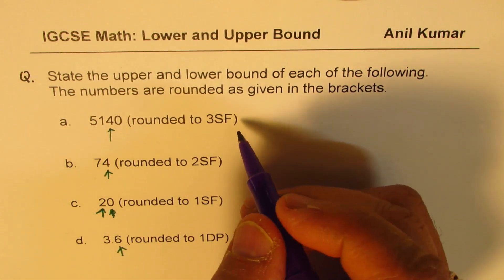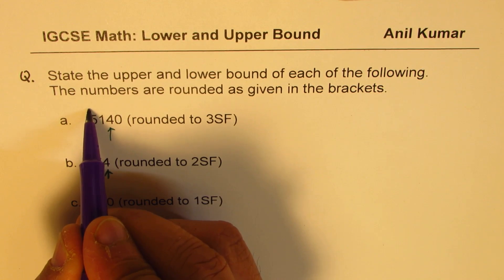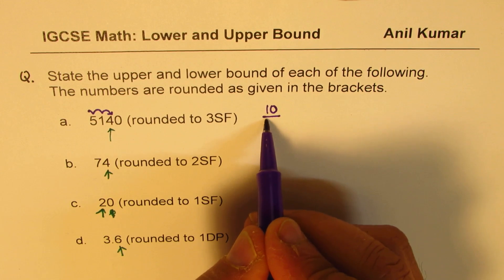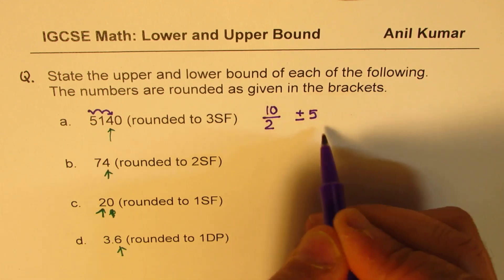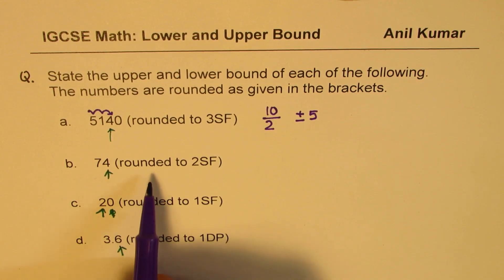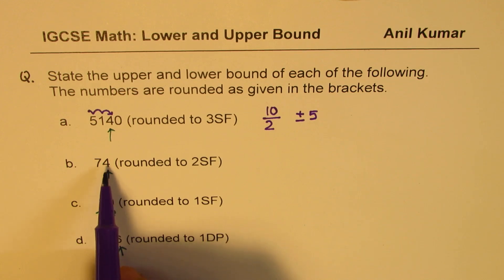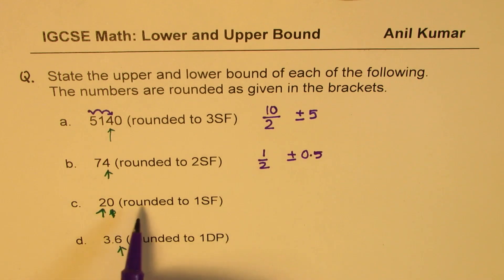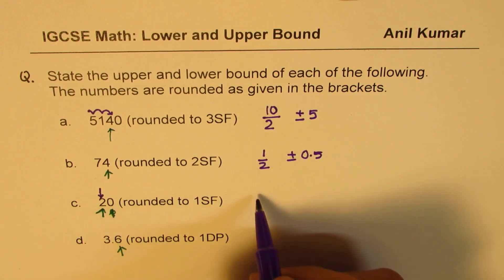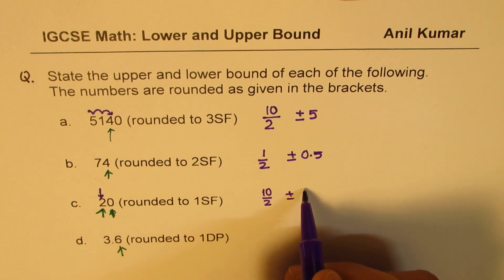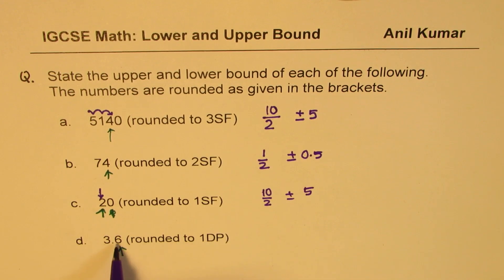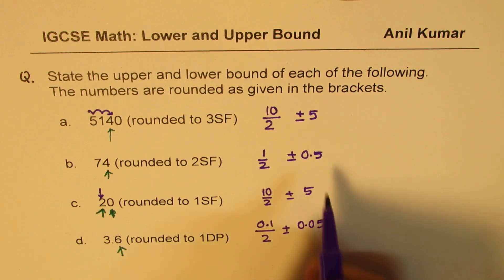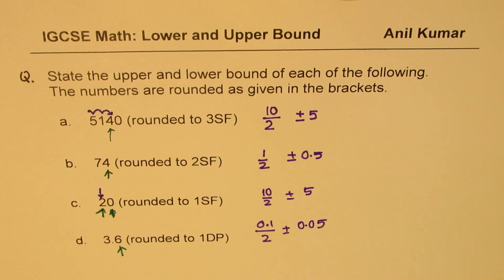Let's look at what kind of rounding was done for each. For three significant figures in 5140, the third significant digit is in the tens place — so we divide 10 by 2, giving us plus or minus 5. For 74, rounded to two significant figures, the digit 4 is in the ones place — so 1 divided by 2 gives plus or minus 0.5. For 20, rounded to one significant figure, the digit 2 is in the tens place — so 10 divided by 2 gives plus or minus 5. For 3.6, rounded to one decimal place, the tenths divided by 2 gives plus or minus 0.05.